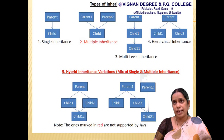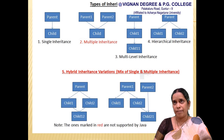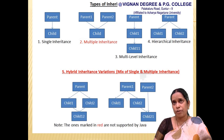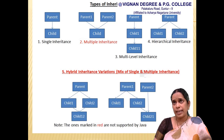The third is multilevel inheritance. From a single parent class, a new child class (Child1) is derived, and from that child class, another child class (Child1-1) is derived. We can create any number of levels — that is, any number of child classes from a single base class — hence it is called multilevel inheritance.